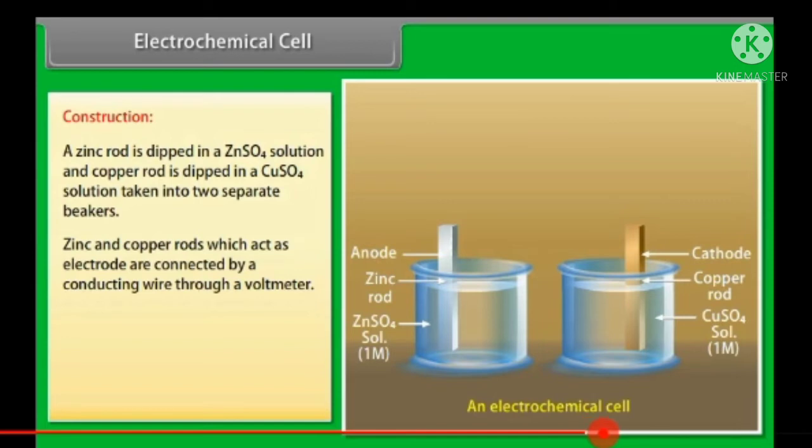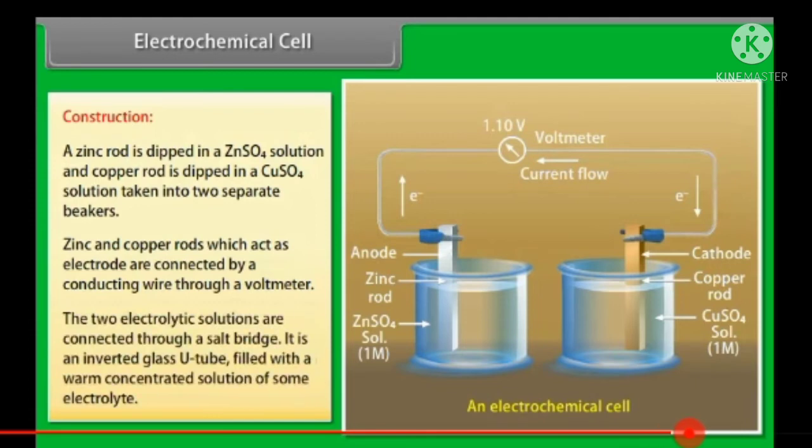Zinc and copper rods which act as electrode are connected by a conducting wire through a voltmeter. The two electrolyte solutions are connected through a salt bridge. It is an inverted glass tube filled with a warm concentrated solution of some electrolyte.